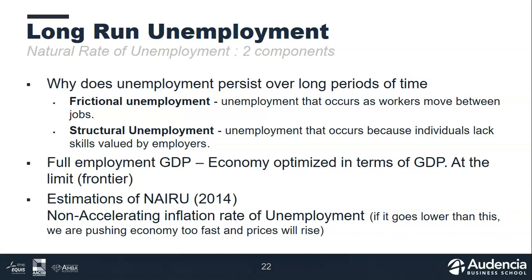Full employment GDP is the rate of employment — or the associated rate of unemployment — when the economy is cruising along on its trend line. We have no cyclical unemployment. At full employment GDP, the economy is operating at its maximum. Sometimes we'd like to push the economy beyond its max — reduce unemployment further, make people work longer hours — but when we go well beyond full employment, we're pushing the economy too far and tend to generate inflation.